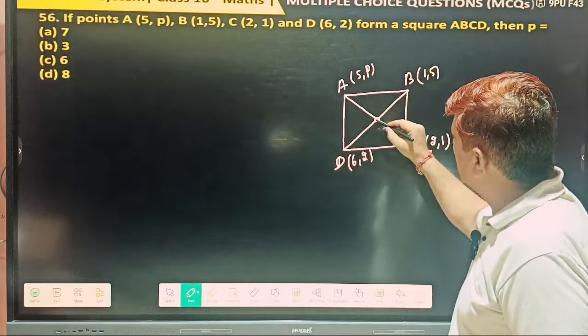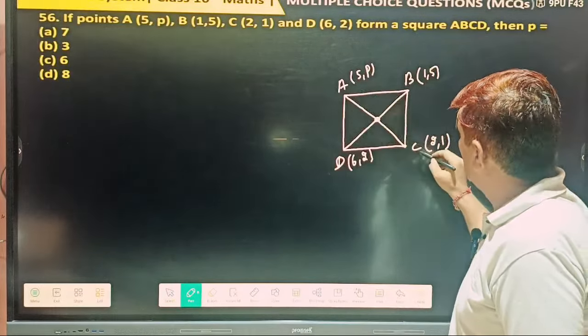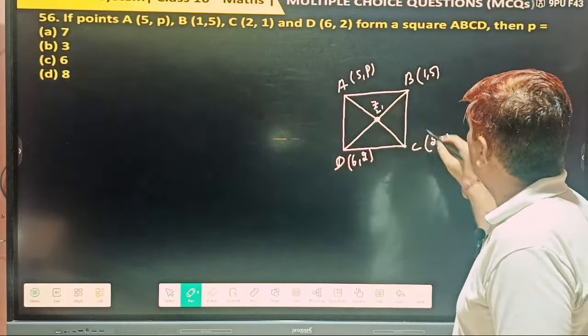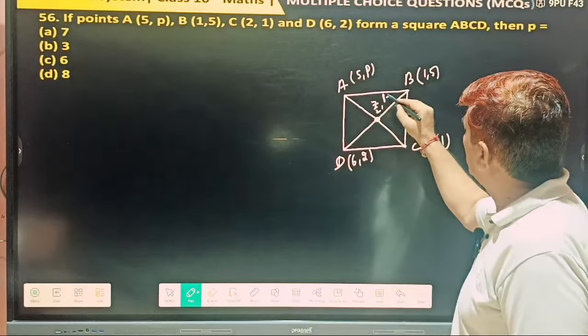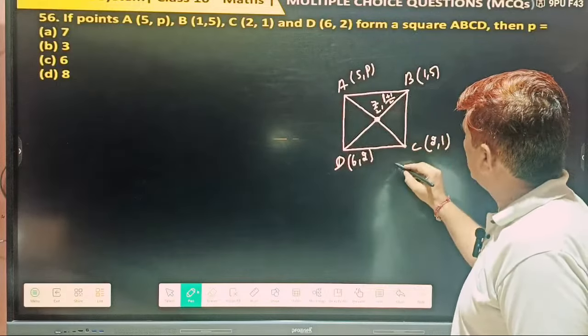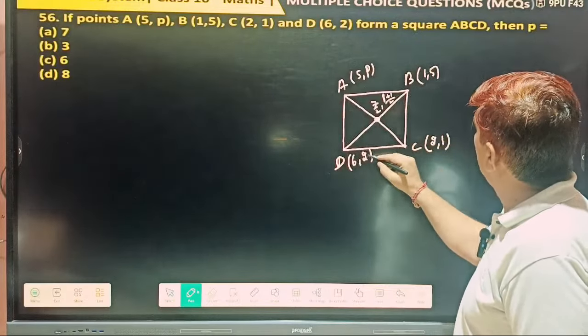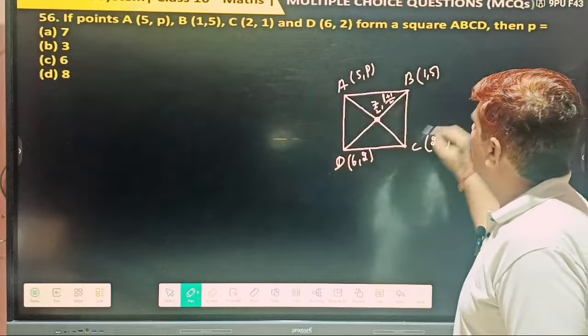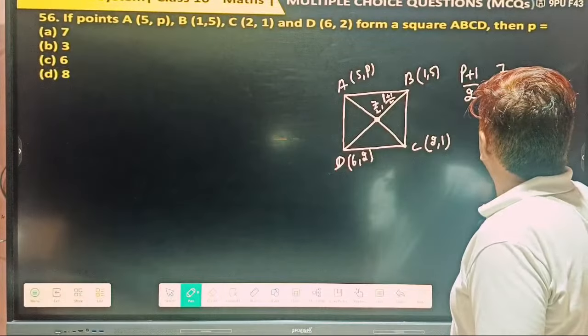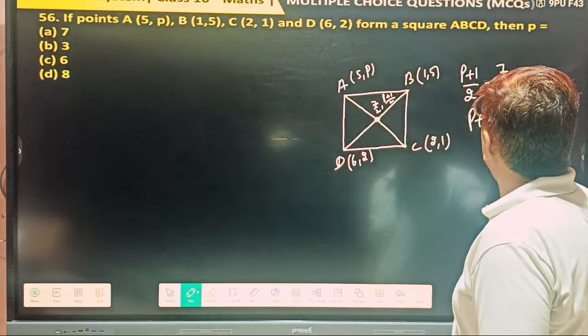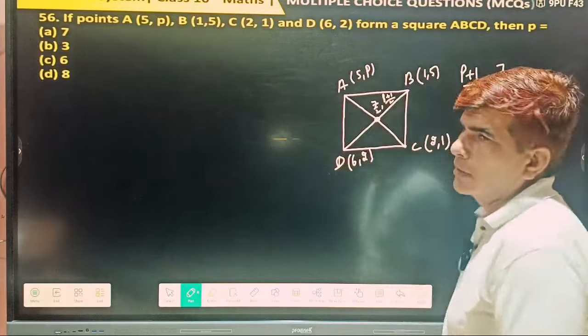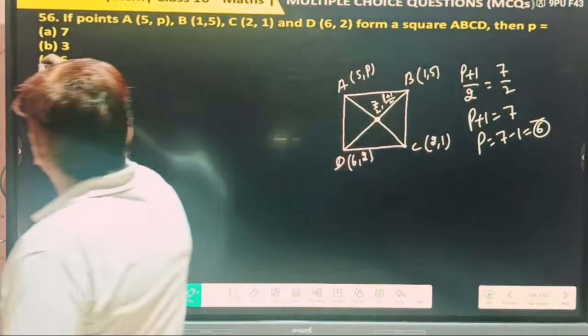And this. This is the midpoint of this. So what are this? 5 plus 2, 7 by 2. Other is what? P plus 1 by 2. And according to BD, 6 plus 1, 7 by 2 is this. 5 plus 2, 7 by 2. So P plus 1 by 2 equal to 7 by 2. So P plus 1 equal to 7. And P equal to 7 minus 1. How much? 6. This is your answer.